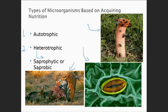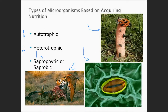If you're a heterotroph, you have to consume something else — either living, was once living, or has been processed and made into something like flour or cornmeal. All those things were once living. Underneath heterotroph is the term saprophyte, saprophytic, or saprobic. They mean the same thing. These are a special type of heterotrophs.